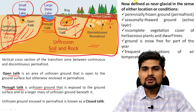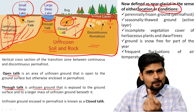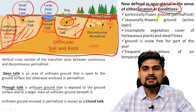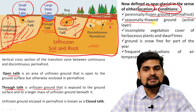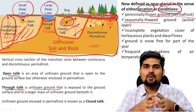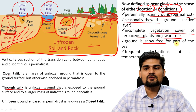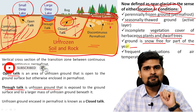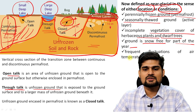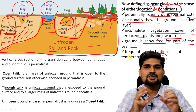The definition of periglacial encompasses both location — near glacial in the sense of being in the periphery — and conditions. Perennially frozen ground, that is permafrost, is one major characteristic. Then it can be seasonally thawed — the active layer melts in season and new vegetation comes up. There is also incomplete vegetation cover of herbaceous plants and dwarf trees. The ground is snow-free for a small part of the year — largely two to three months — while frequent fluctuations of air temperatures across zero degrees Celsius are very common in these areas.